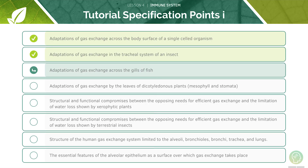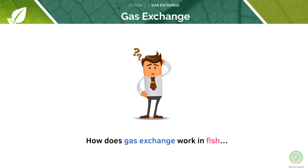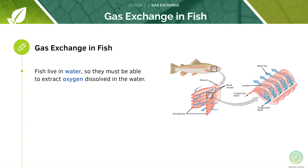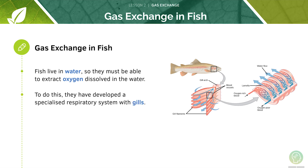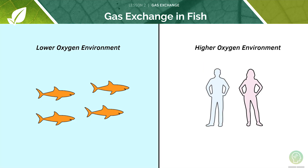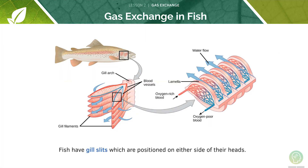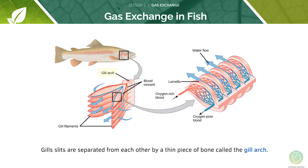Now let's look at fish. Fish are aquatic organisms. To get the oxygen out of water, fish have developed a specialised respiratory system with gills. Fish live in a lower oxygen environment compared to humans — there is a lower partial pressure of oxygen in seawater compared to atmospheric air. They have gill slits positioned on either side of their heads. These gill slits are separated from each other by a thin piece of bone known as the gill arch.